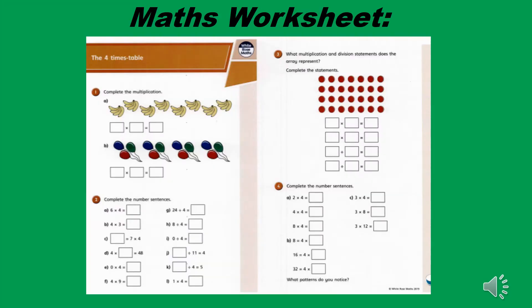We are looking at the four times tables again today. On your maths worksheet, you have got some pictures to start off with. You're going to count the bunches of bananas, count how many bananas are in your bunch, and use those numbers to help you come up with a number sentence in the boxes. And you're doing something very similar with the group of balloons — see how many groups of balloons you have, count how many balloons are in each group, and complete your number sentence. You also have some multiplication and division questions to complete.